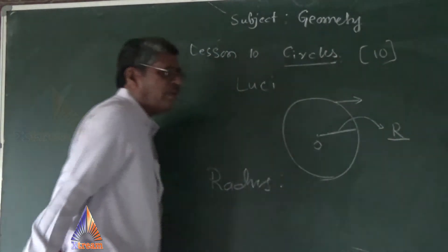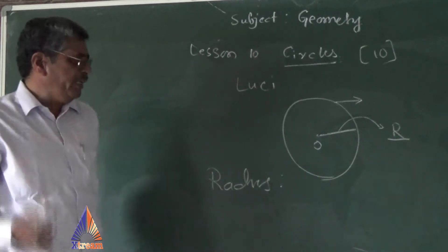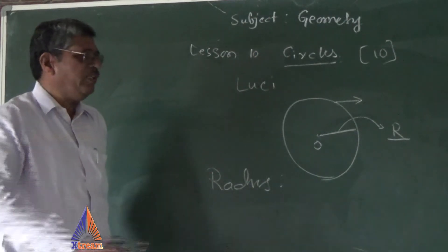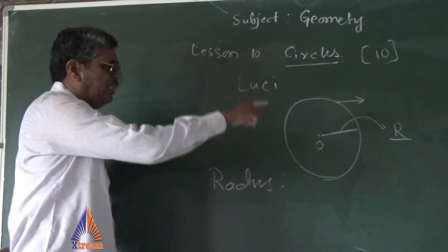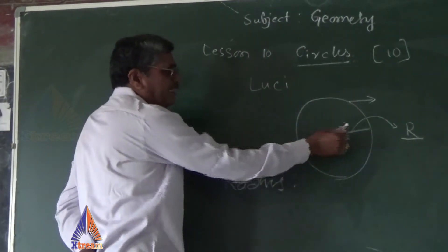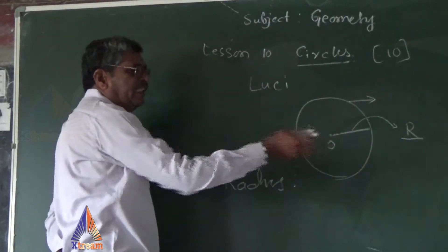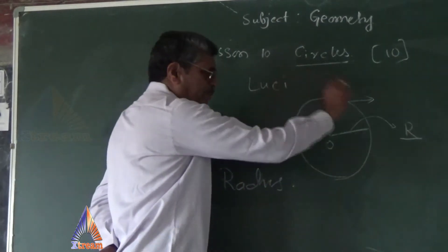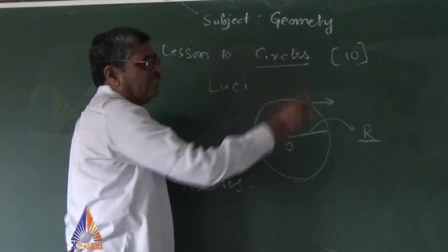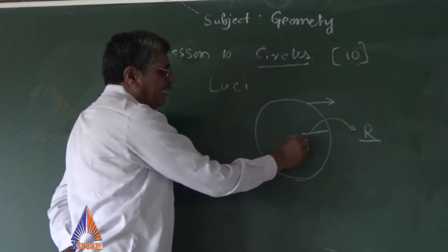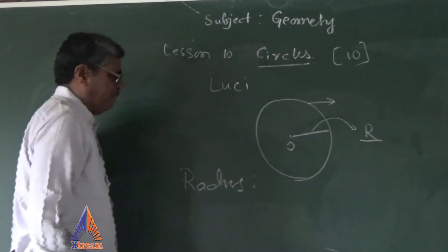Take your compass and set a radius of two centimeters — you can draw one circle of that size. If you use a radius of three centimeters, the circle is bigger, and four centimeters gives an even larger circle. So radius is a very important part of a circle.